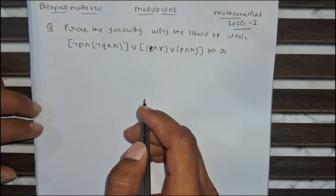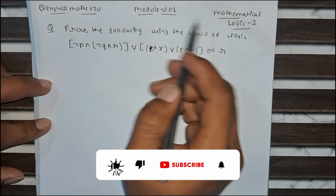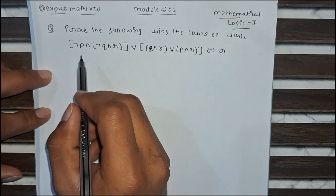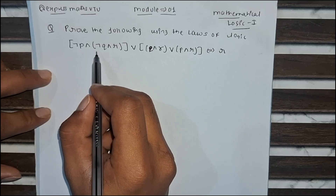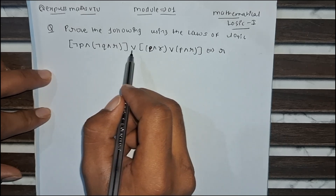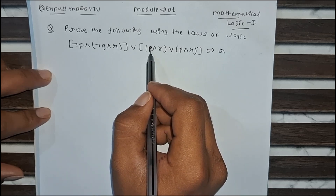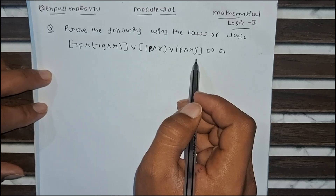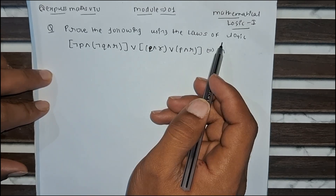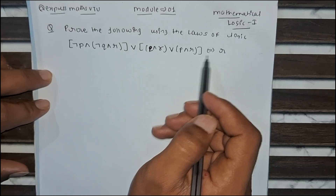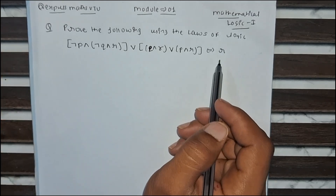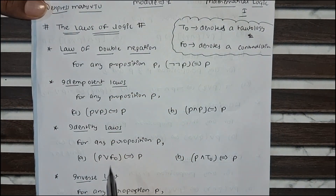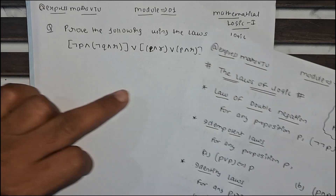Hello everyone, today we are going to solve another important problem from Module 1, Mathematical Logic. The question is: prove the following using the laws of logic — negation P conjunction whole negation Q conjunction R, disjunction Q conjunction R, disjunction P conjunction R, which is equivalent to R. By using the laws of logic we have to prove this expression is equivalent to R. This is the table for laws of logic; all properties are there and by using these properties we have to prove this expression.